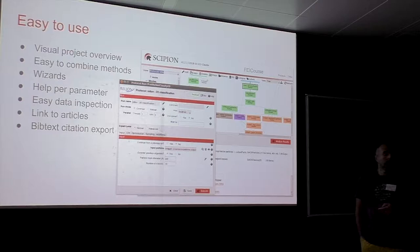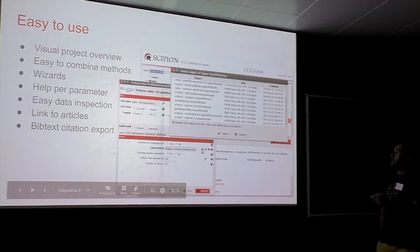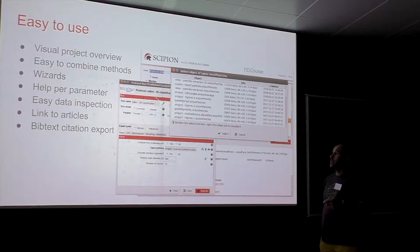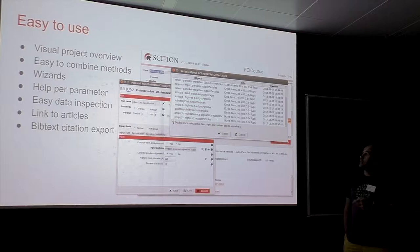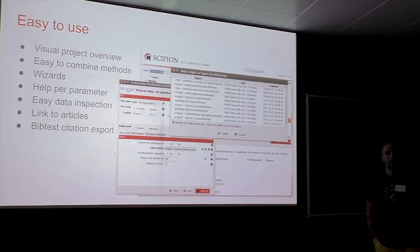How do you combine methods? From the user's point of view, it requires no effort. You just link one box to the other by clicking on the connector, and Scipio shows all outputs available within your project that have a compatible type. For example, 2D classification in Relion requires a set of particles, so it shows all methods outputting a set of particles — whether from Relion, Scipio subset operations, XMIPP, or any other package.